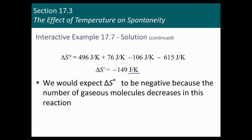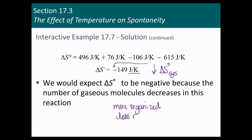In this case, the entropy of the system is negative, and that means we see a decrease in the entropy of that system. Something was going on there that made for more organization, less randomness. What it was is that the number of gas molecules decreased, and when that happens there's going to be less randomness and you'll see a decrease in the entropy of the system.